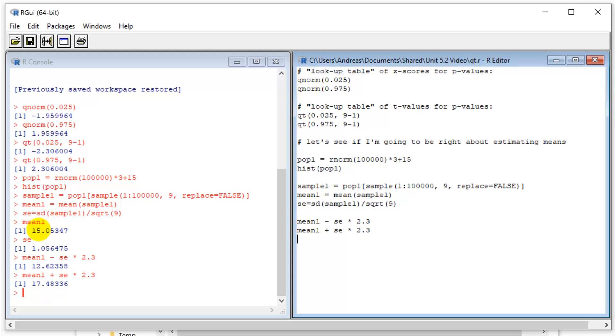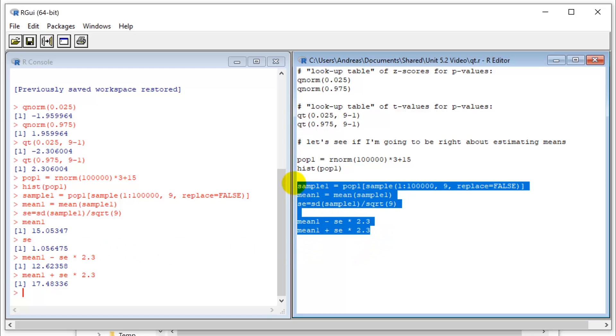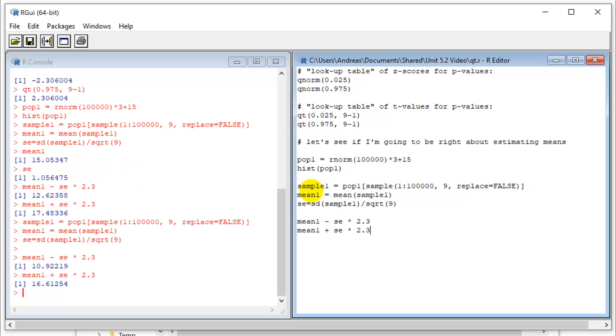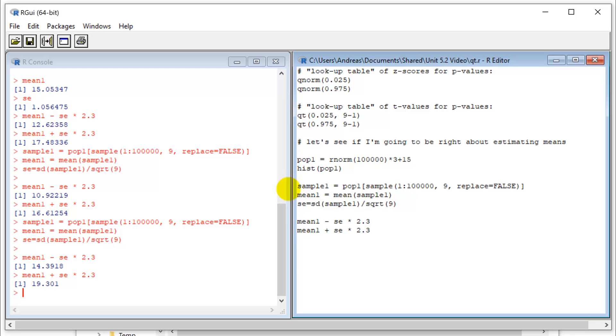And maybe I got lucky this first time because I really got very accurate estimates of my population parameters. So let's do this again. So this time we're still right. The true population mean falls within this interval. And let's run this a couple more times.